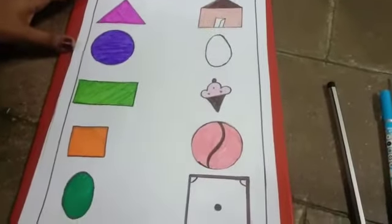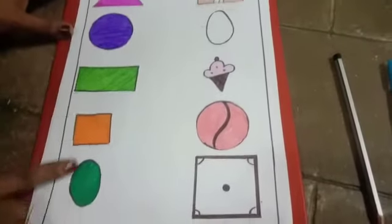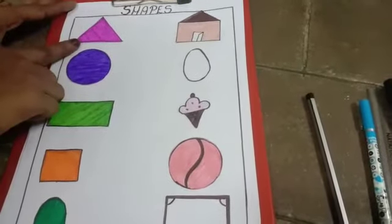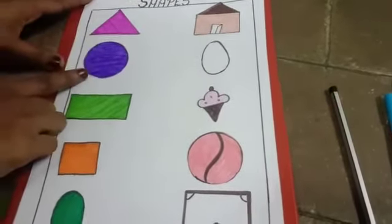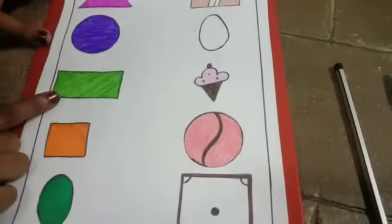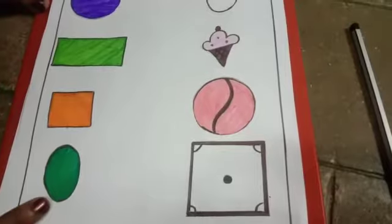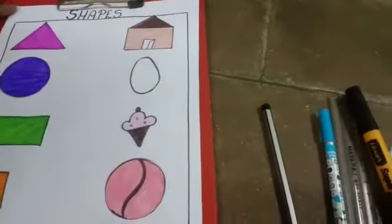Students, on one side I have drawn shapes. The shapes are triangle, circle, rectangle, square, and oval. On the other side I have drawn figures.